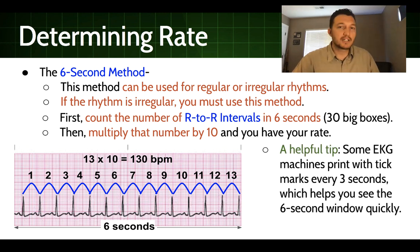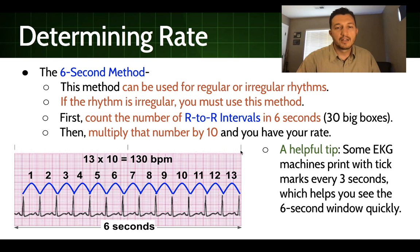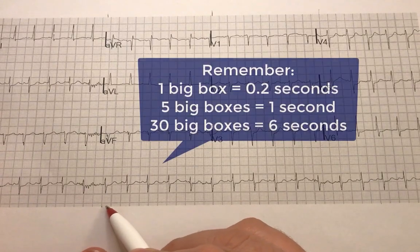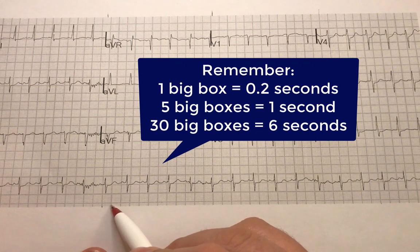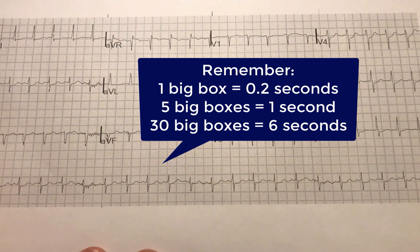One helpful tip: some machines mark out a tick every three seconds. When that's the case on a rhythm strip, there's a line every three seconds, making it really quick and easy to decide where six seconds is without counting all 30 boxes. One big box is 0.2 seconds, five of these big boxes is one second, so 30 big boxes will be six seconds.